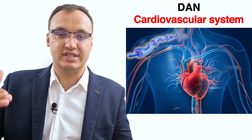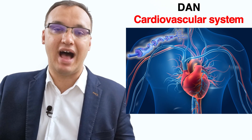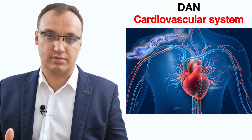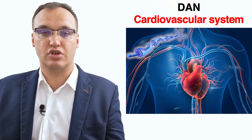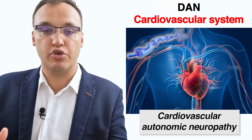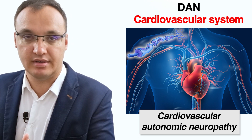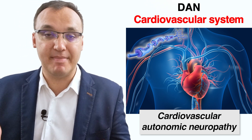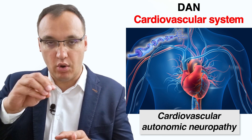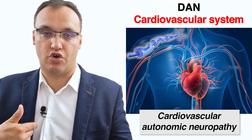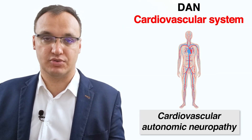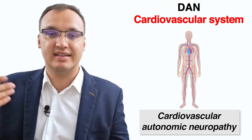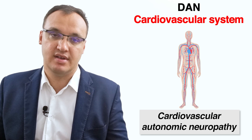First, we will consider how diabetic autonomic neuropathy affects the cardiovascular system. When it is affected, we call it cardiovascular autonomic neuropathy. It is the most clinically important form because it manifests as damage to the autonomic control of your cardiovascular system — not just the heart, but all of it — and that can have very tragic events.